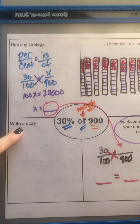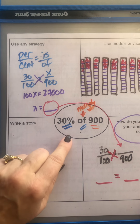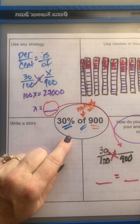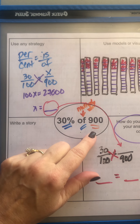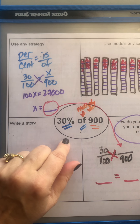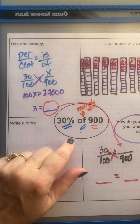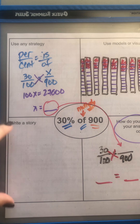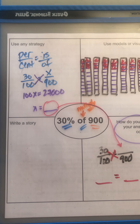Now you need to write a story. You can say pretty much anything — for example, your goal is to do 900 sit-ups and you want to do 30% today, or something costs $900 and it's on sale 30% off. There are different things you can do for writing a story. Hopefully that explains all the parts you had to do today. I didn't do all of it for you — I left you a little bit of work but sent you down the right path. Good luck.